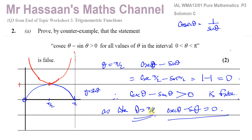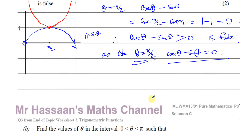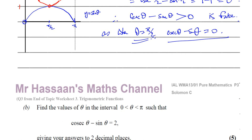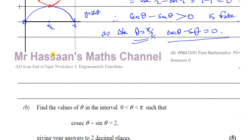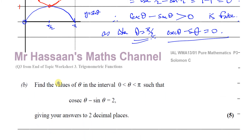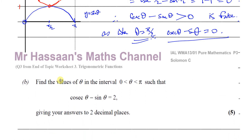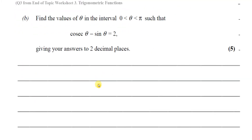We've proved it false by finding a counter example — pi over two is that example. You find one example which proves the statement to be not true. That's part A of the question. Part B tells us to find the values of theta in the interval zero to pi such that cosec theta minus sine theta equals two, giving answers correct to two decimal places.